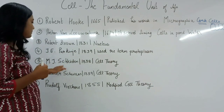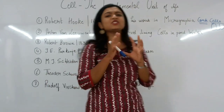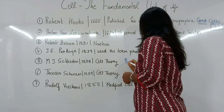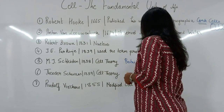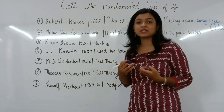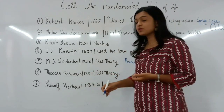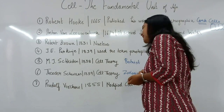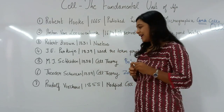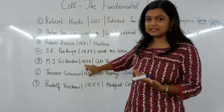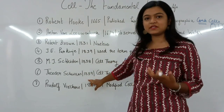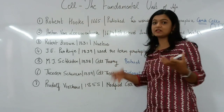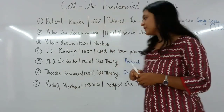Proceeding further, M.J. Schleiden and Theodor Schwann gave the cell theory. Schleiden was a botanist who gave a cell theory confined to plants in the year 1838, while Theodor Schwann was a zoologist who gave a cell theory confined to animals in 1839. In the year 1839 itself, both these theories were combined and a modern cell theory was formed.